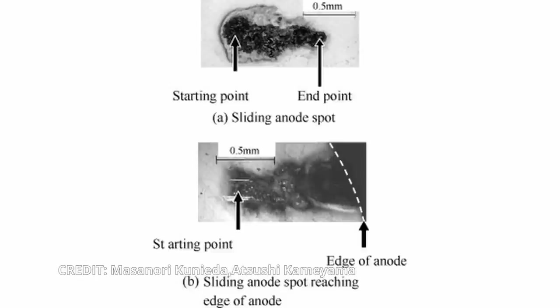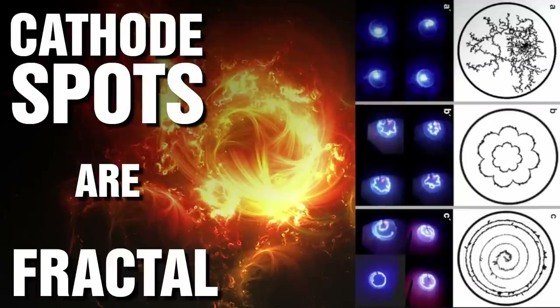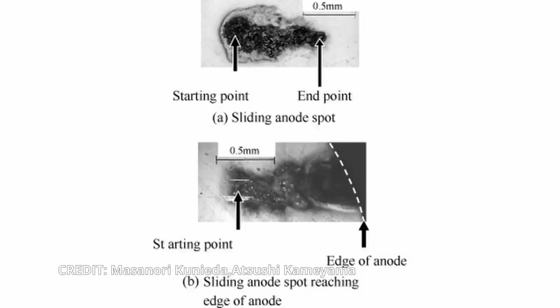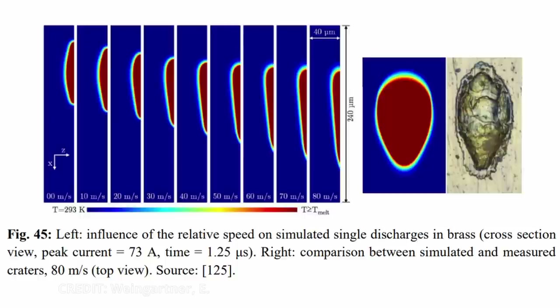Sliding arc spots. Several factors can affect the movement of the arc spots, which we have previously examined in the cathode spots. For prolonged discharges the movement of the arc discharge or the movement of the anode will cause dramatic changes to the shape of the crater created — starting with no movement producing a more spherical crater, to a more teardrop-shaped crater with increased movement.